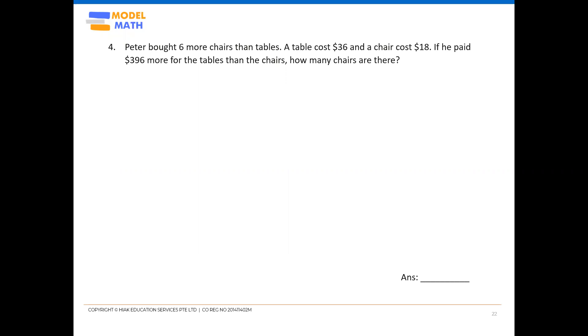Okay, Peter bought six more chairs than tables. A table cost $36 and a chair cost $18. He paid $396 more for the tables than the chairs. How many chairs are there?